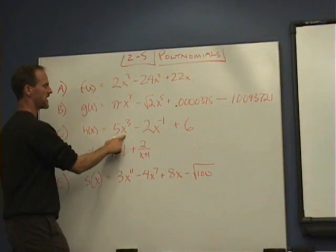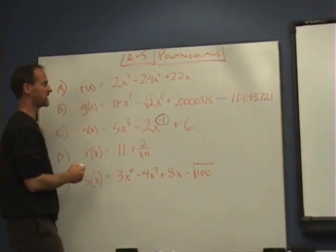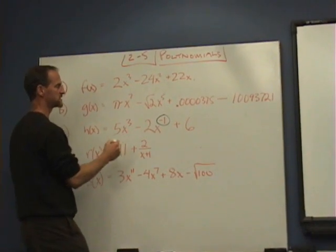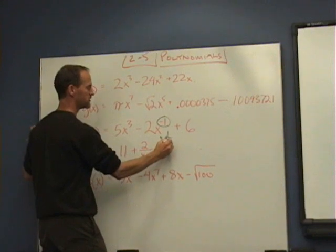h(x) - reading through this, this is okay but this is our first real problem, so this one is no can do. It's not a polynomial because this is the same as saying 1 over 2x.